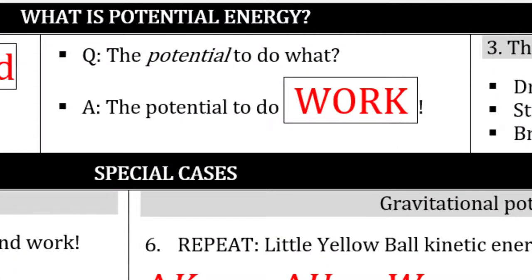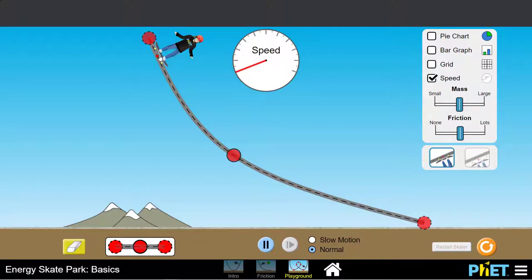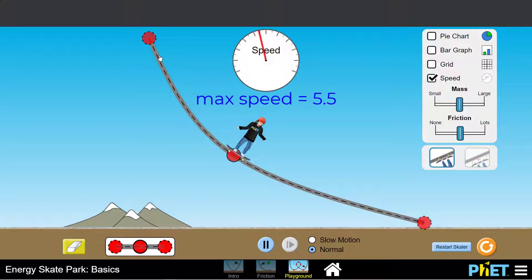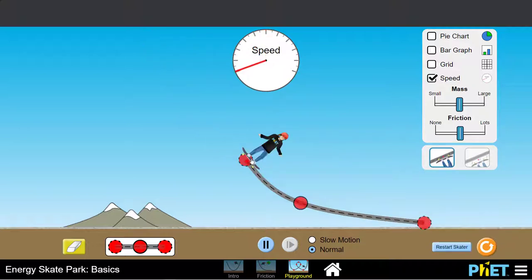Question, the potential to do what? Answer, the potential to do work. This skater has a lot of potential energy. That means the gravitational force can do a lot of work and increase the skater's kinetic energy by the time they get to the bottom of the ramp. This skater has very little gravitational potential energy, so there's not a whole lot of work that the gravitational force can do to increase their kinetic energy.